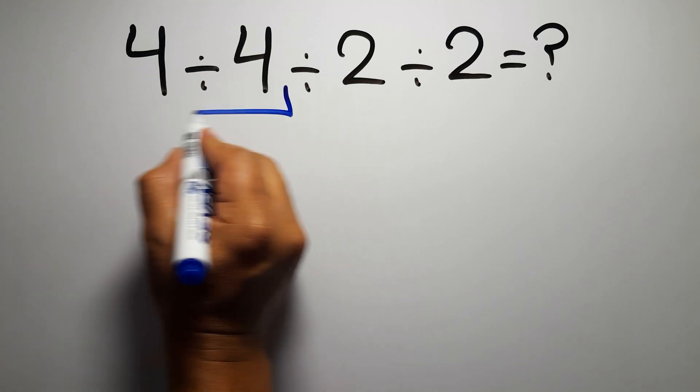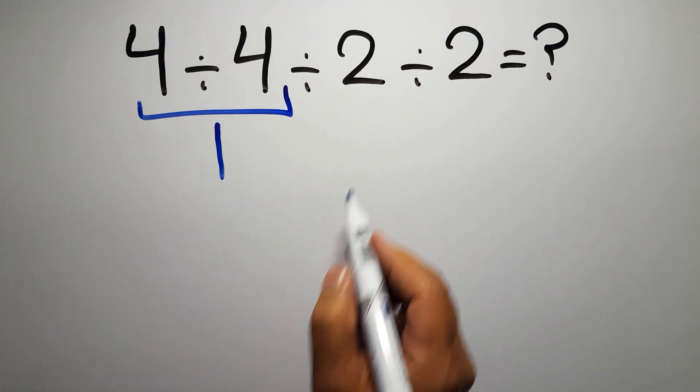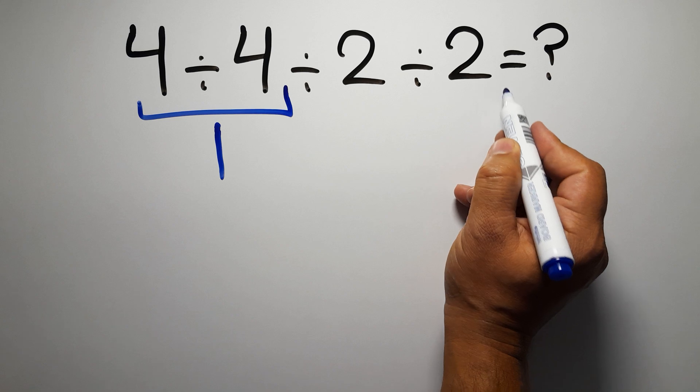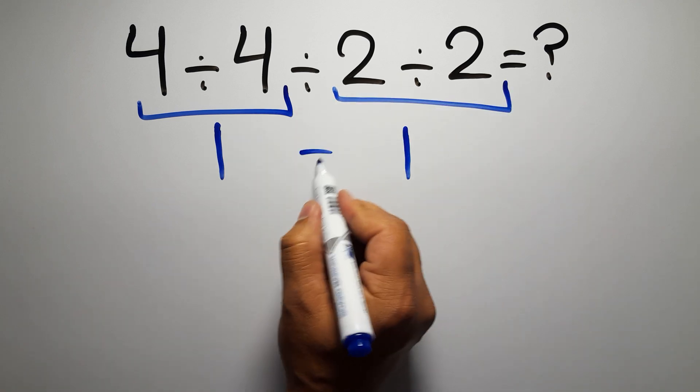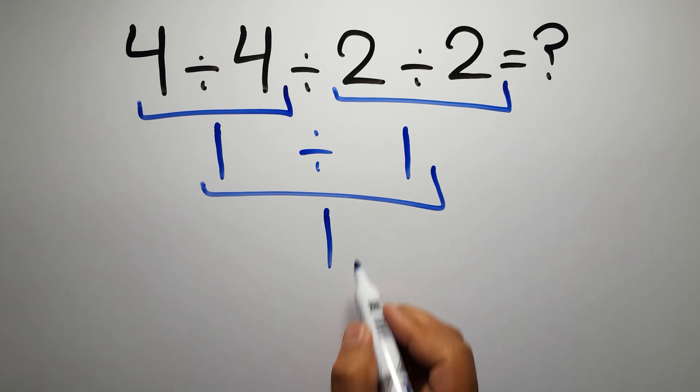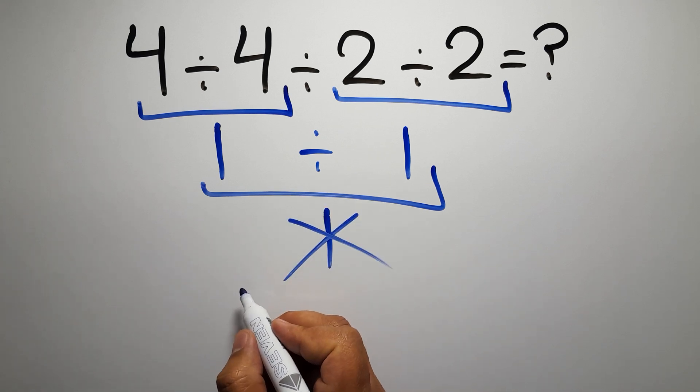4 divided by 4 gives us 1, and here we have 2 divided by 2 which gives us 1. So 1 divided by 1 equals 1. But this answer is not correct because according to the order of operations, when we have more than one division in an expression, we have to go from left to right.